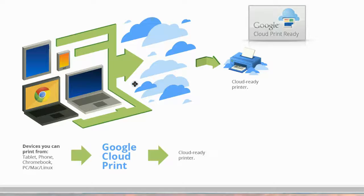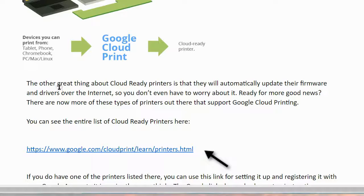In this diagram, we have your tablet, smartphone, Chromebook, or Windows or Mac PC connected to the internet. If you've purchased a Google Cloud Print ready printer, from any of those devices, no matter where you're located, you can print to your printer. The other great thing about cloud-ready printers is that they will automatically update their firmware and drivers over the internet, so you don't even have to worry about it. Ready for more good news? There are now more of these types of printers out there that support Google Cloud Printing.